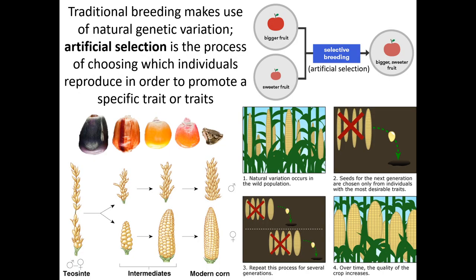Traditional breeding makes use of the natural variation that exists amongst individuals or organisms. We use what's called artificial selection, also called selective breeding — a term more often used with animals, but they mean the same thing. This is the process where we choose which individuals we produce in order to promote specific traits.